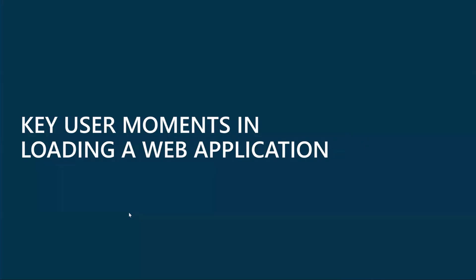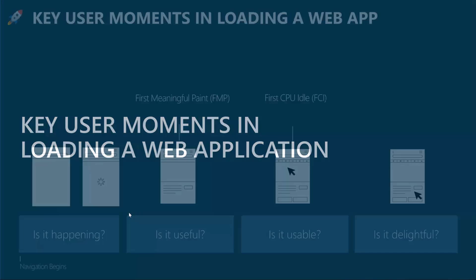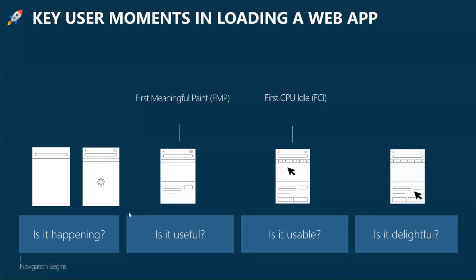With that in mind, let's look at some of the key user moments in loading and interacting with a web application that we're focusing on. Fundamentally, our aspiration is to load the page and render the most relevant content to you as the user as fast as possible, and to ensure that you can interact with that content smoothly and efficiently. We can think of the page load process comprising four different stages: whether the user perceives the page to actually load, whether the displayed content is useful, whether it's actually usable, and finally whether page interactions are seamless and smooth.